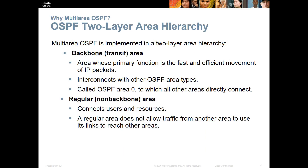OSPF is a two-layer hierarchy. We have our regular backbone — our transit area — and we have our regular non-backbone area. Basically, the backbone area is where primary functions occur: fast, efficient movement, interconnecting other OSPF areas. We call this Area 0. All the regular areas connect back to our backbone and connect users and resources. Typically, a regular area does not allow traffic from one area to pass through to another area, but that can be subjective.